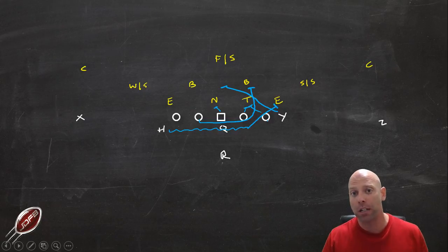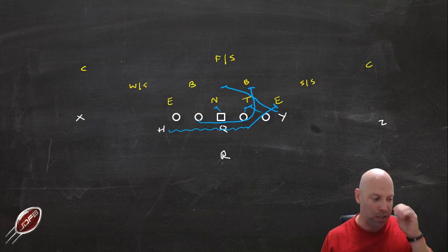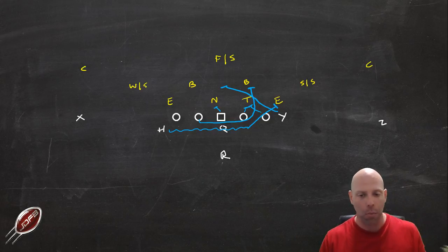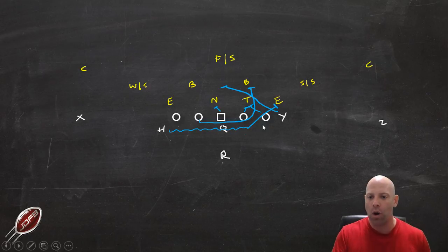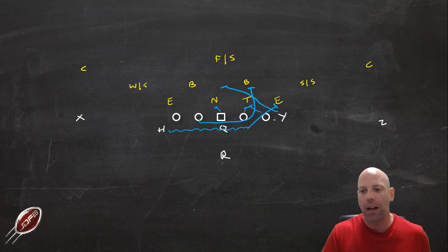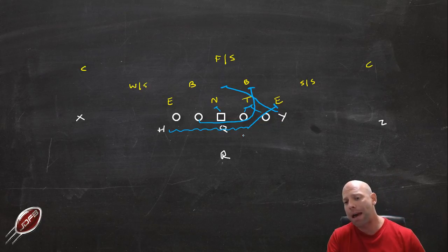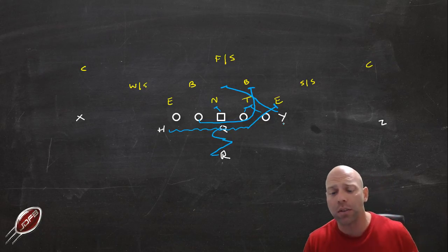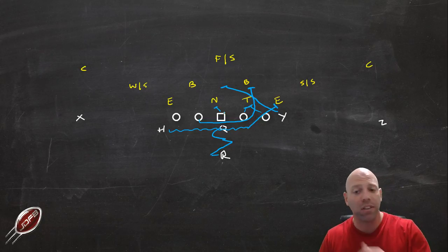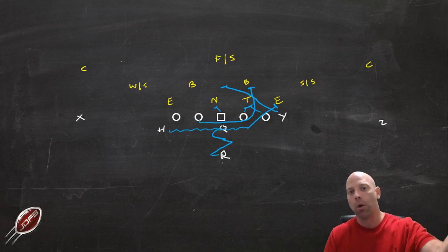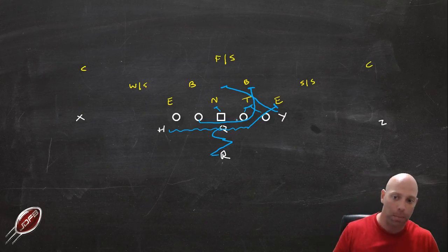I've evolved to where the H-back is standing behind the tackle and kicking that guy out, because it minimizes the amount of time while still getting the deception I want in the backfield. I like a counter step and the quarterback to reverse pivot, giving a different look to the linebackers from our zone. I like to have the same first step on every running play — that first step is going to look like we're running left when in reality we're counter stepping and coming back.